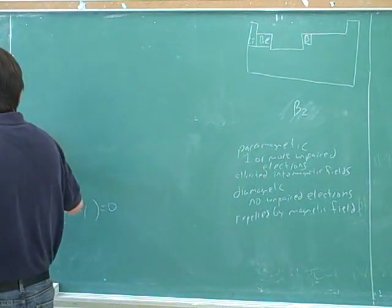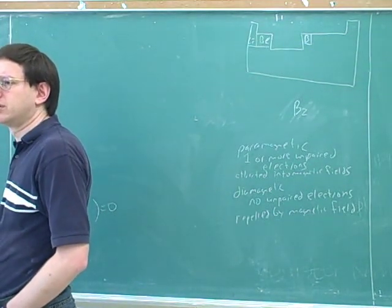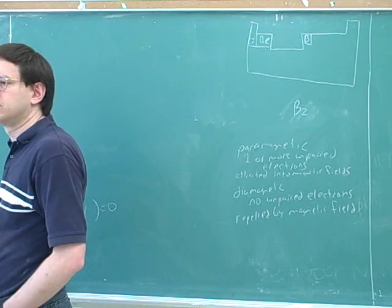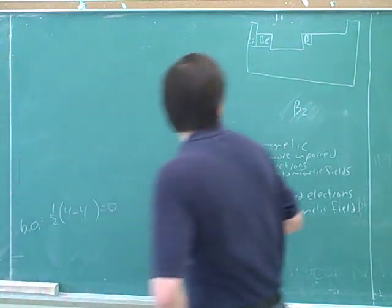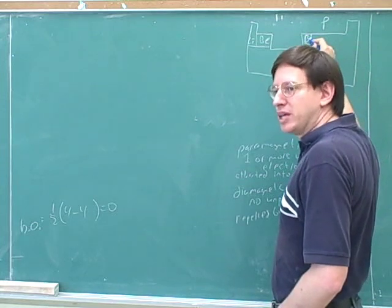Is it going into the p block? Yeah, so what orbitals would it be using in total? Yeah, so this is the p block and this is in the second row so it's the 2p block.